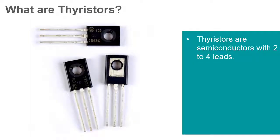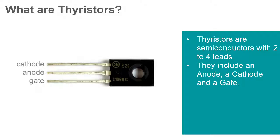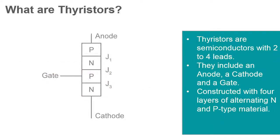A thyristor is a solid-state semiconductor device that has from two to four leads that typically include an anode, a cathode, and a gate. They're constructed with four layers of alternating N- and P-type semiconductor material. The term silicon-controlled rectifier, or SCR, is often used interchangeably with thyristor.